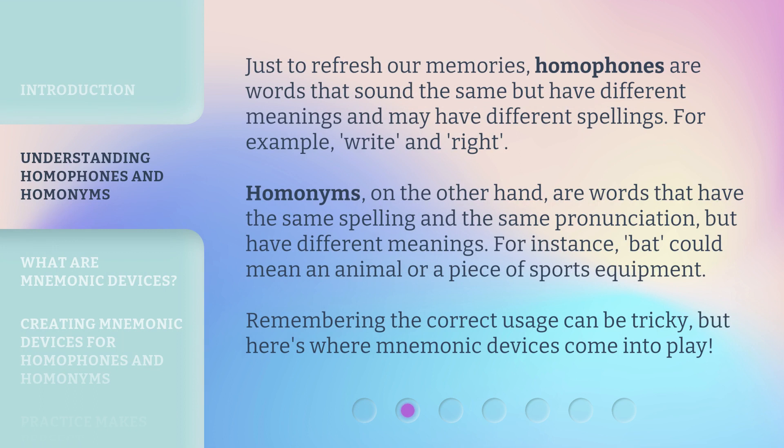Just to refresh our memories, homophones are words that sound the same but have different meanings and may have different spellings. For example, 'right' and 'write'. Homonyms, on the other hand, are words that have the same spelling and the same pronunciation but have different meanings. For instance, 'bat' could mean an animal or a piece of sports equipment. Remembering the correct usage can be tricky, but here's where mnemonic devices come into play.